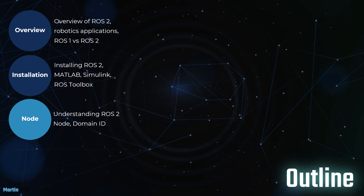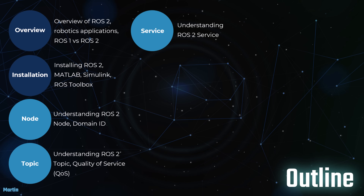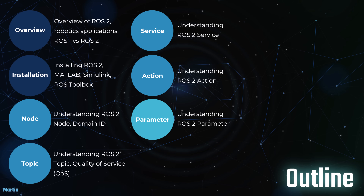By configuring the domain ID, you can prevent nodes from accidentally communicating across different ROS2 systems. Next, we'll discuss ROS2 topics and quality of service, QoS. Topics are used for message passing between nodes, and QoS settings determine how these messages are transmitted. Services in ROS2 allow for request-response communication between nodes. Actions are used when a node needs to initiate a task that may take time to complete, such as moving a robotic arm to a specific position. Parameters in ROS2 provide a way to configure nodes without modifying code, allowing us to change certain aspects of node behavior dynamically.